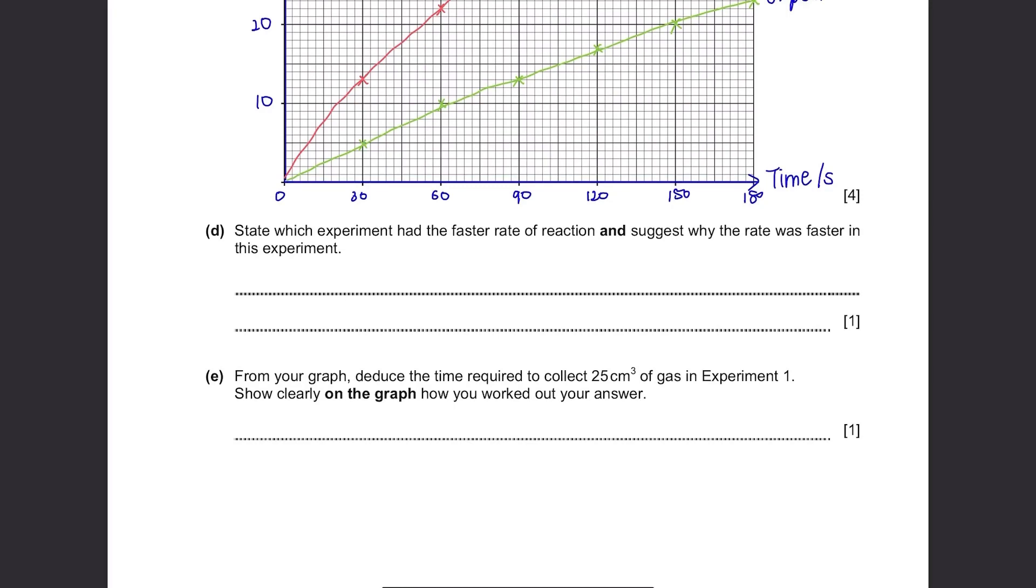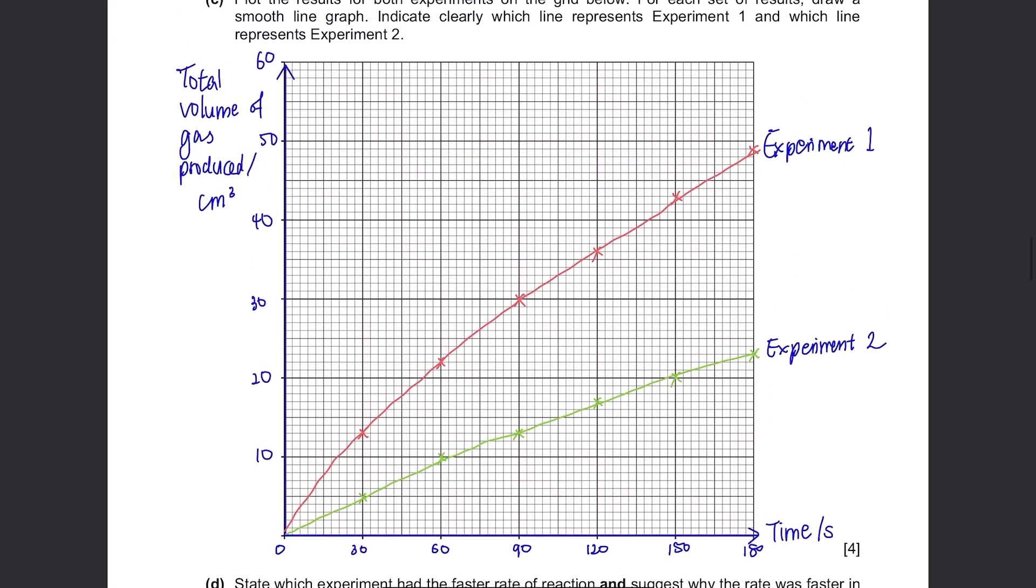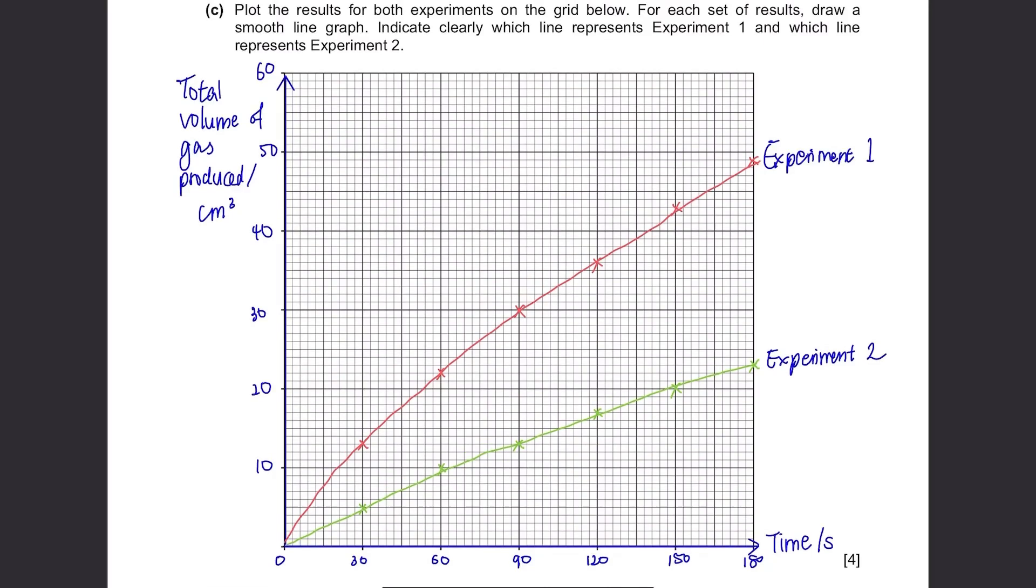Part D. State which experiment had the faster rate of reaction and suggest why the rate was faster in this experiment. We can see from the graph that experiment 1 had the faster rate of reaction and this can be due to acid X being a stronger acid or a more concentrated acid.